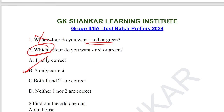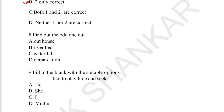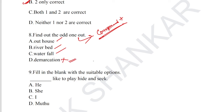Question number 8: find out the odd one out, from the grammar section on compound words. Option A: 'outhouse' is a compound word. 'Riverbed' and 'waterfall' are also compound words. 'Demarcation' is not a compound word — it is based on a clipped word; the clipped form of 'demarcation' is 'mark'. Option D is the odd one out among the compound words and is the correct answer.